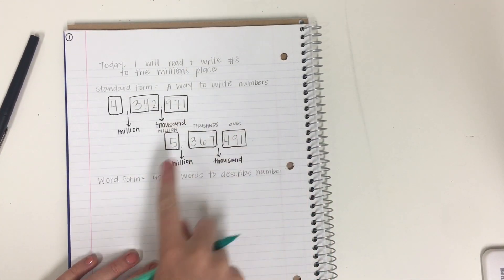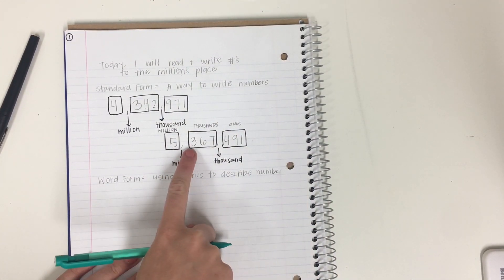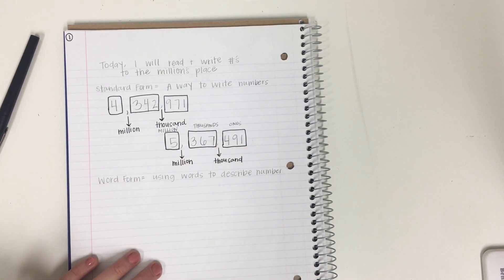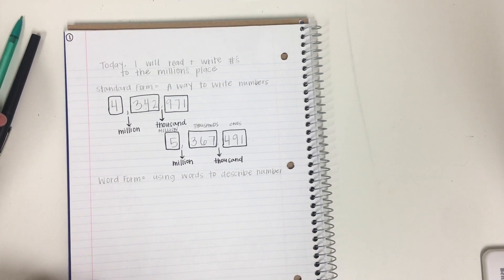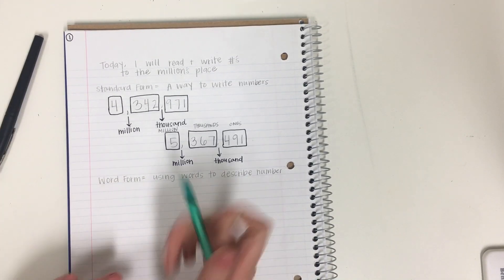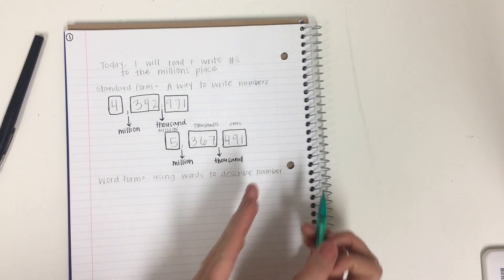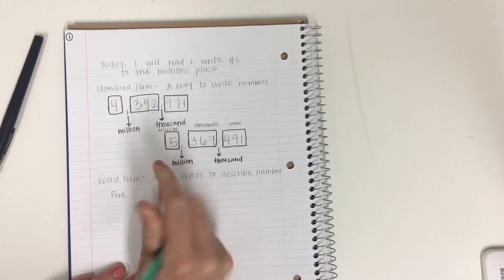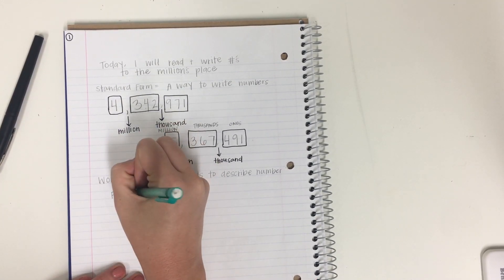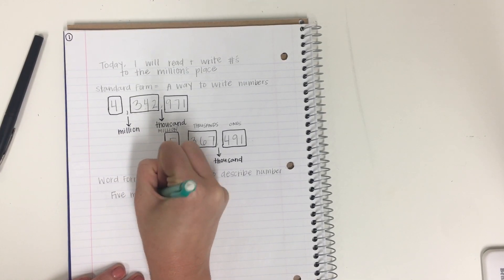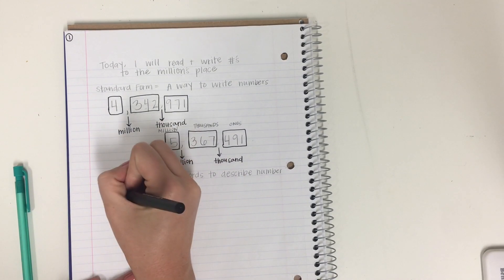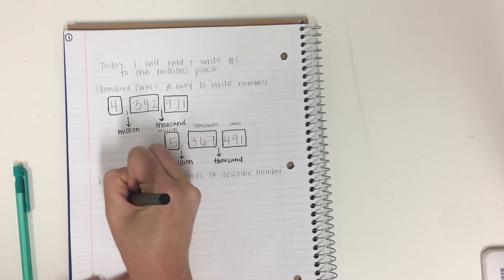So let's pull this number. 5,367,491. All I'm going to do is put these into words. So I'm going to watch me and write with me. So I'm going to work from left to right. So I'm going to write. Five. And then what am I working with? Million. And I'm going to add that comma. Okay? So here's our first box. Five million.